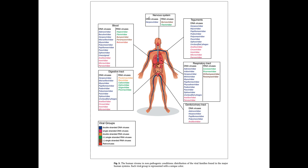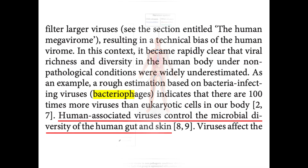So why aren't we all dead from all these bacteria and viruses that outnumber human cells? Because the combination of bacterial cells and viruses outnumber human cells, yet viruses aren't cells — they're fragments. Human-associated viruses actually control the microbial diversity of the gut and skin. Without these viruses, we would be in big trouble. Healthy individuals are able to rapidly clear transient viral infections — cleared by immune cells or moved through the airway.